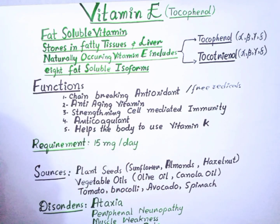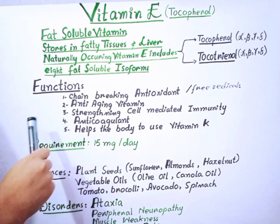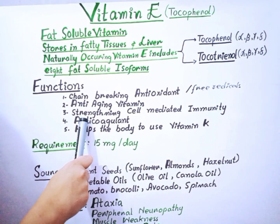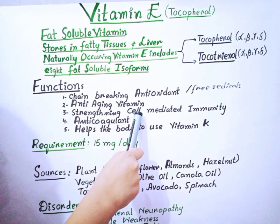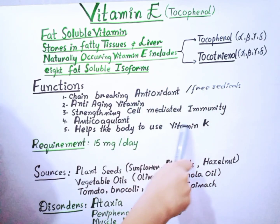The second function of Vitamin E is anti-aging. Vitamin E has been used in dermatology since the 1950s. It protects the skin against aging, protects our cells from oxidative damage, and increases blood flow to the skin and to our cells. It is a good anti-aging vitamin.